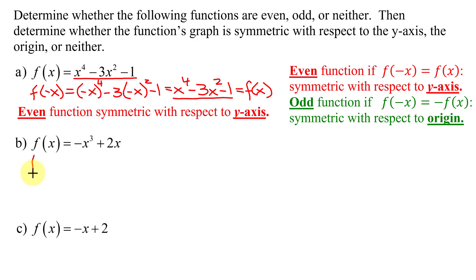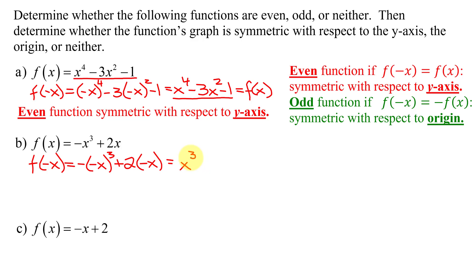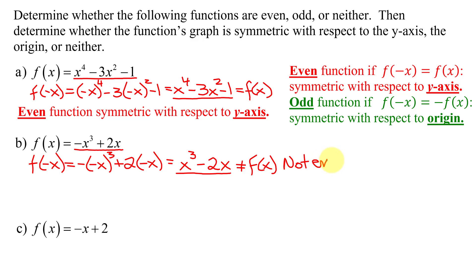Looking at our second example, figuring out f of negative x: it is the opposite of negative x all cubed plus 2 times negative x. Here I have three negatives, then one here — four negatives total — so my first term is going to be positive, as four is an even number, so I get x cubed, and then 2 times negative x is negative 2x. Now is this the same as my original function? No, it does not equal f of x, so I know this function is not even.